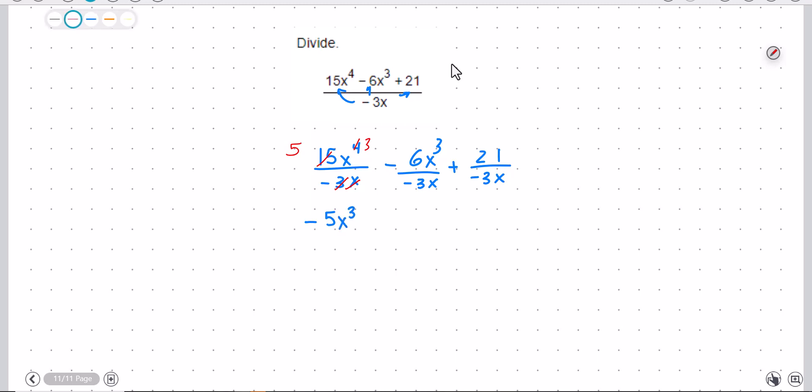On here, I can see a negative and a negative is going to give me a positive. 3 goes into 6 two times, and then that will get rid of one x, so plus 2x squared.